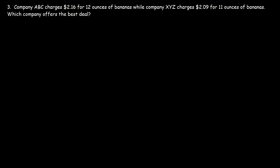Now let's move on to our last problem. Number three: Company ABC charges $2.16 for 12 ounces of bananas, while company XYZ charges $2.09 for 11 ounces of bananas. Which company offers the best deal? So would you say it's company ABC or company XYZ? Well, let's find out. But how do we find out? What we need to do is compare the unit rate for each item offered by each different company. So let's start with company ABC. Let's calculate the unit rate. We want to find out which one offers the best deal or which one offers the lowest price per ounce of bananas.